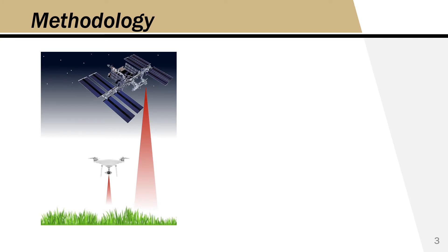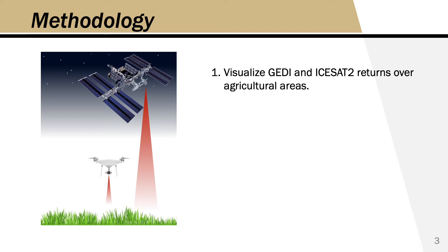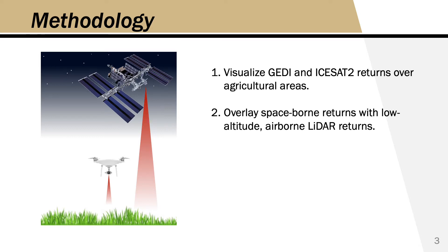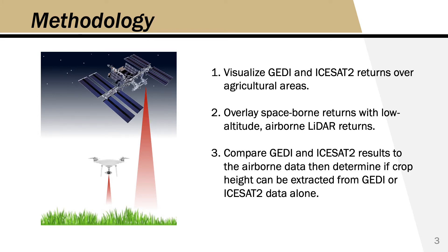The methodology is as follows. First, the elevation data from GEDI or ICESat-2 will be collected and visualized over a specific agricultural area. Then, over the same agricultural area, we will have an independent dataset collected from an airborne vehicle — either a UAV or a fixed-wing manned aircraft — at a much higher resolution. The two datasets will then be compared. The assumption is that the high-resolution airborne dataset will show the top of the canopy and the ground elevation, and we'll see if the space-borne dataset can also provide indicators of both.